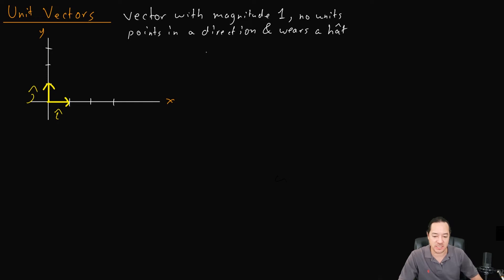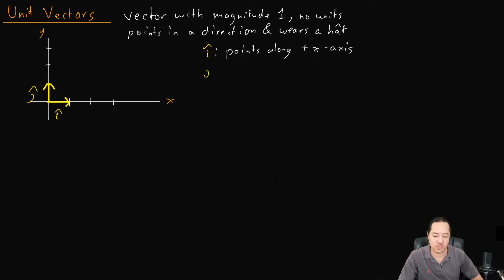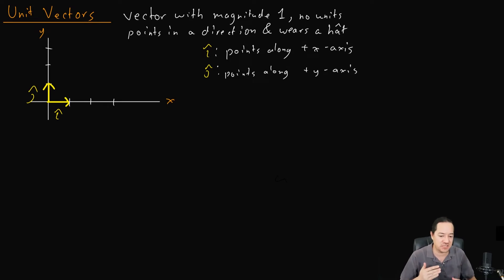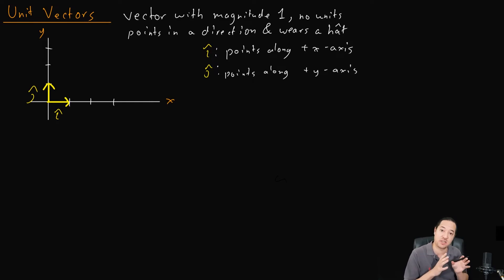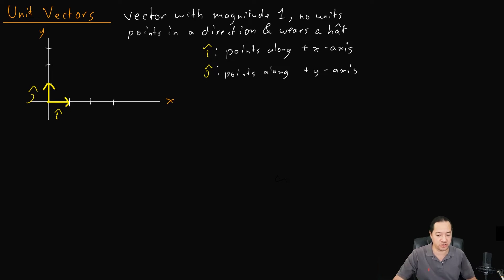The i-hat vector points along the positive x-axis, and then the j-hat vector points along the positive y-axis. So this is a new kind of notation that we're going to be using. Although it seems kind of redundant, it actually winds up being very useful to separate magnitude and direction. We put all the direction information into the unit vector, and then the magnitude is something else that you can multiply by this unit vector.